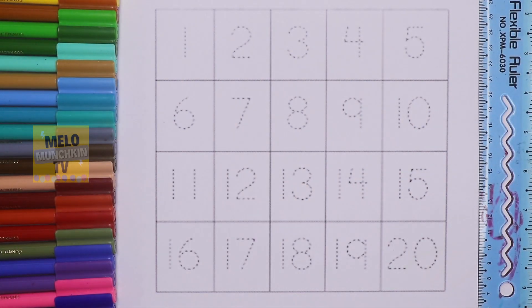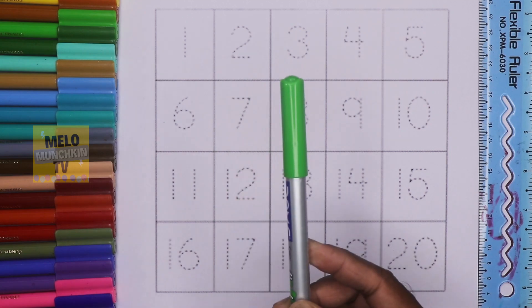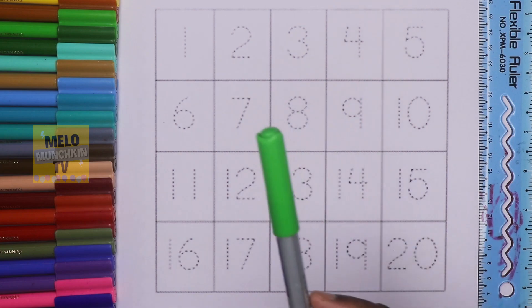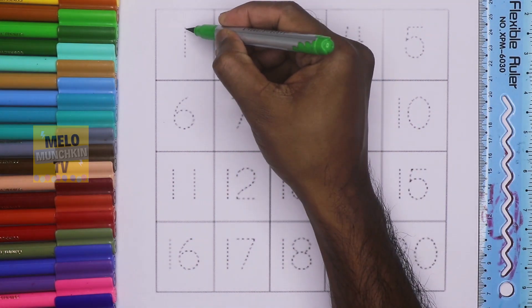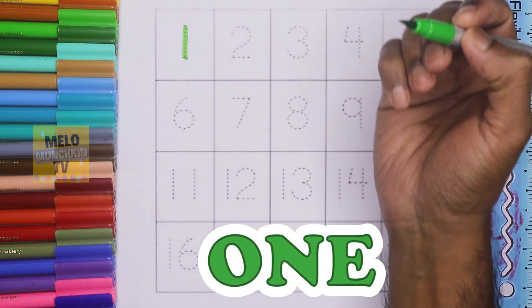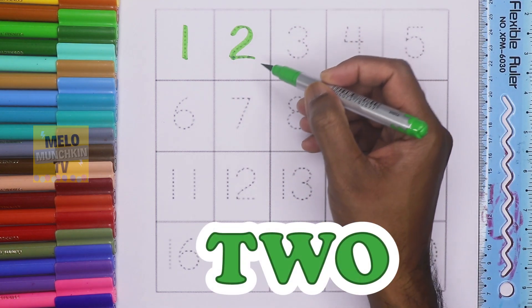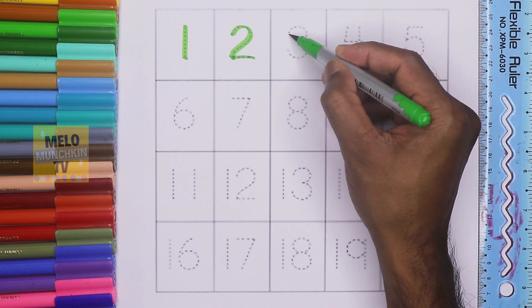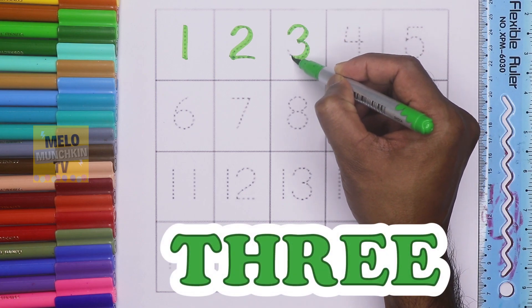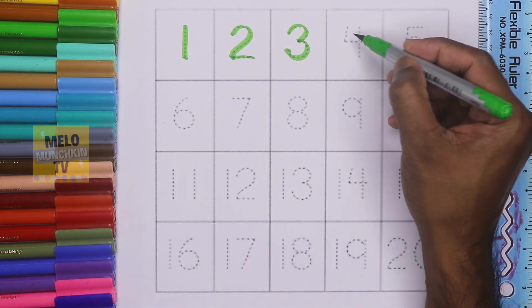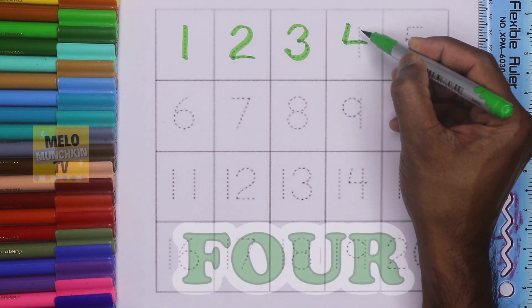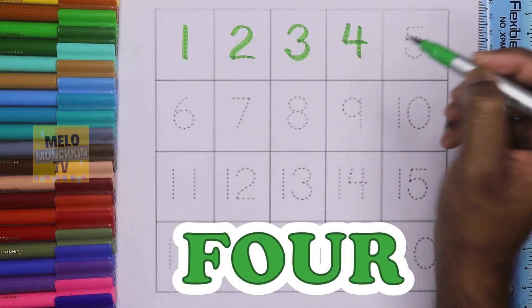Hello kids, today we'll learn numbers from 1 to 20, so let's get started. First I'll take green color to write the first line. This is 1, one, this is 2, two, this is 3, three.